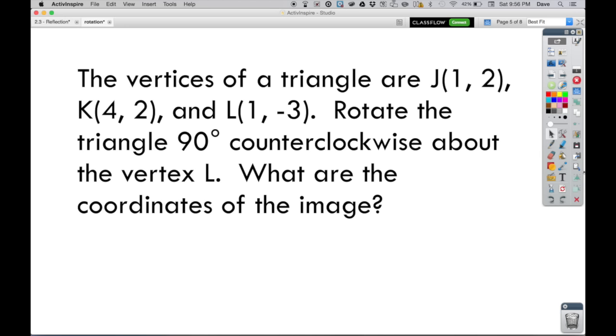So let's take a look at this example problem. The vertices of a triangle are J, K, and L, and as you can see, they've given us the coordinates for those points. They want us to rotate the triangle 90 degrees counterclockwise about the vertex L. What are the coordinates of the image? All right, so let's have a look at how we would do that.